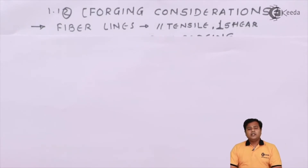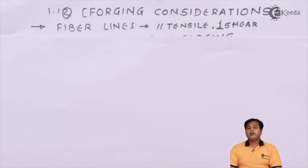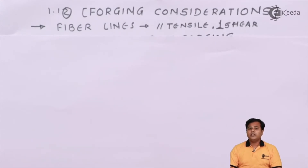The second important point is that fiber lines should be perpendicular to the shear stresses. As we know, shear stresses always act at a certain angle with the normal stresses. We have to make sure that the fiber lines are oriented such that if shear stresses act on them, they act perpendicular. That was the first consideration for forging as far as machine design is concerned.